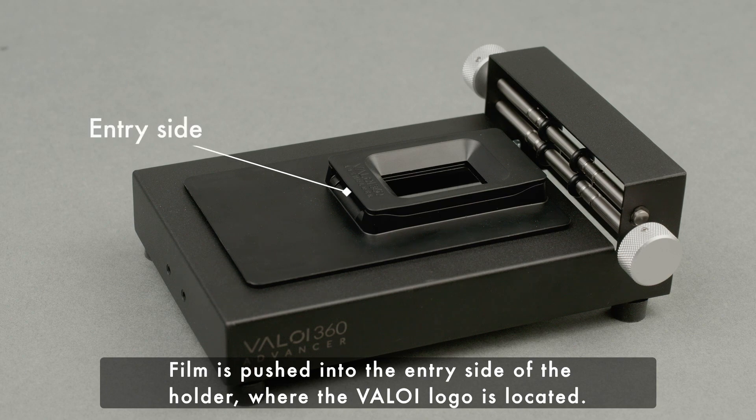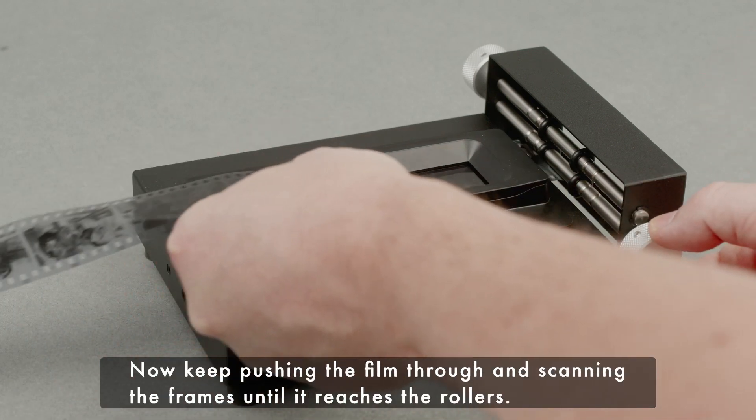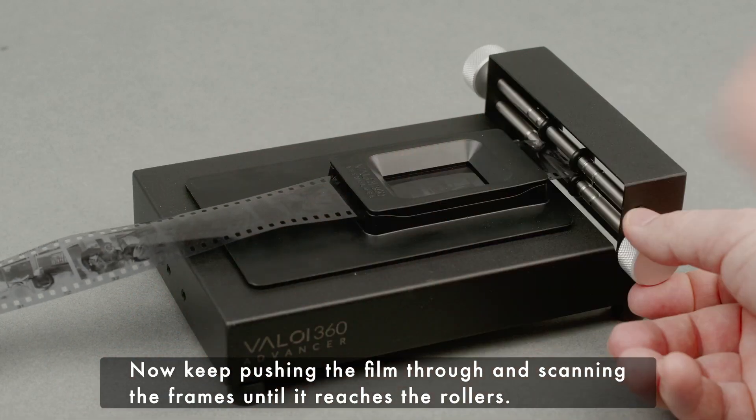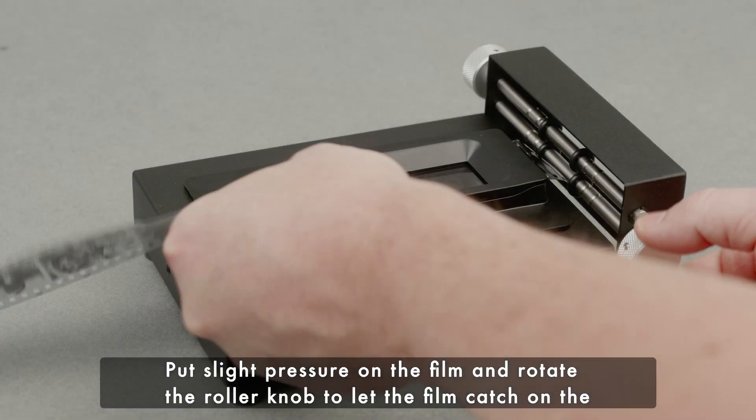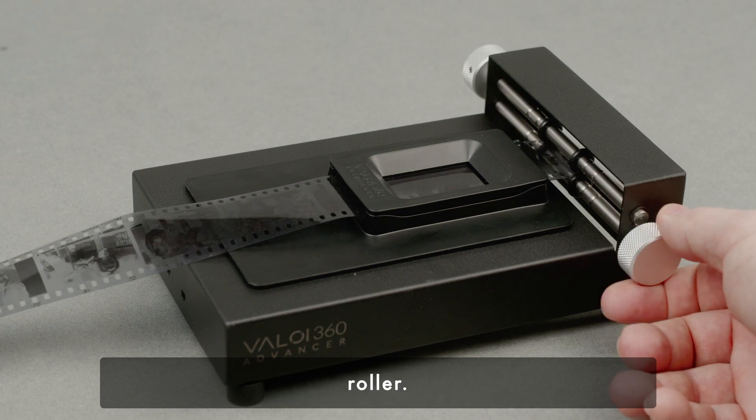Film is pushed into the entry side of the holder where the Valoy logo is located. Push the film until the first frame is seen and scan the film. Now keep pushing the film through and scanning the frames until it reaches the rollers. Put slight pressure on the film and rotate the roller knob to let the film catch on the roller.